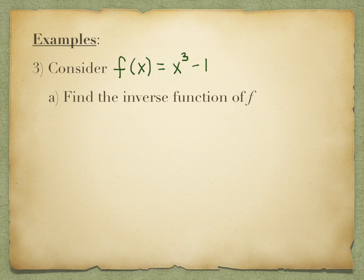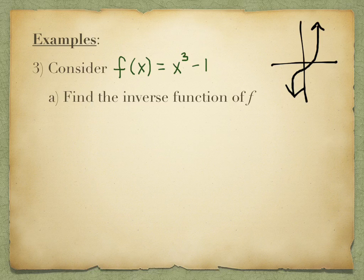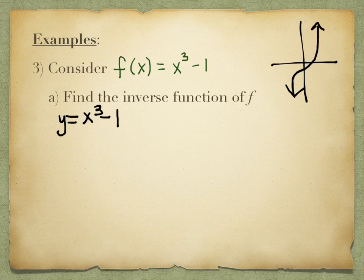The first thing says to find the inverse function of f — and the directions indicate that it does, in fact, have one. If you were to graph it, it would look something like this — that same curved feature, but shifted down one because of the subtraction of one at the end. If you draw horizontal lines, it passes the horizontal line test, so it does pass this test. So we replace f of x with y: y equals x cubed minus 1. Then switch x and y: x equals y cubed minus 1.